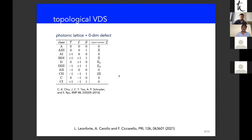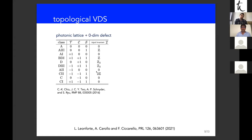Now for topological VDS — this is where VDS prove their usefulness the most. The framework provides a general scheme for building topologically protected atom-photon dressed states. You identify which of the ten Altland-Zirnbauer symmetry classes your photonic lattice belongs to. It is known that depending on the class, when you introduce a zero-dimensional defect (a vacancy), if there is a non-zero topological invariant, a bound state will appear in the middle of the band gap. If you then tune the atom to resonance with this mid-gap state, you get a zero-mode VDS that is topologically protected.